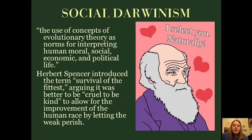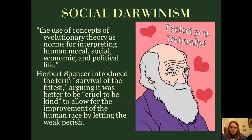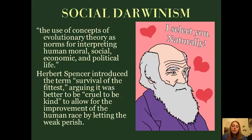The thing to understand about social Darwinism is that Darwin is not a social Darwinist — and I know that sounds crazy because his name is in there, but Darwin himself is not a social Darwinist. Social Darwinism is other people taking Darwin's theory and using it as a norm for interpreting various aspects of moral, social, economic, and political life. An example of social Darwinism is: only the fittest survive, so poor people are unfit and therefore we should let them die. This is what Herbert Spencer says — he takes the term 'survival of the fittest' and says we should let the human race improve naturally. Darwin does not believe this. People like Herbert Spencer are the social Darwinists.